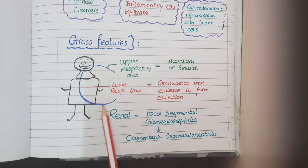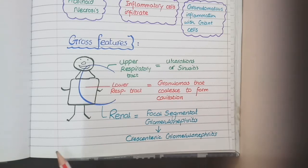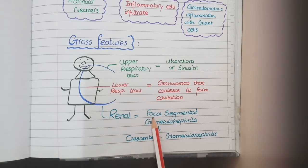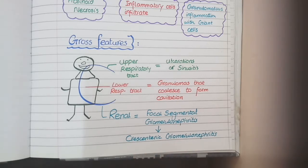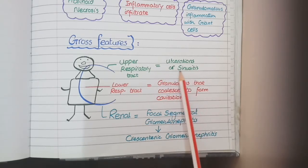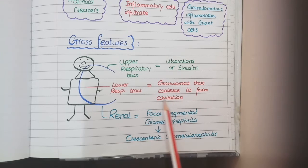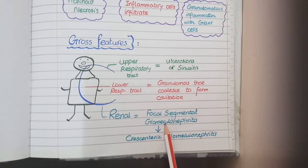The lower part of the C passes through the kidneys. Wegener's granulomatosis causes narrowing of small vessels of the kidney — specifically the glomeruli. This lesion results in focal segmental glomerulonephritis, which can eventually progress to a more severe form called crescentic glomerulonephritis. Overall, Wegener's granulomatosis causes ulcerations or sinusitis in the upper respiratory tract, granulomas and cavitations in the lower respiratory tract, and focal segmental glomerulonephritis in the kidneys.